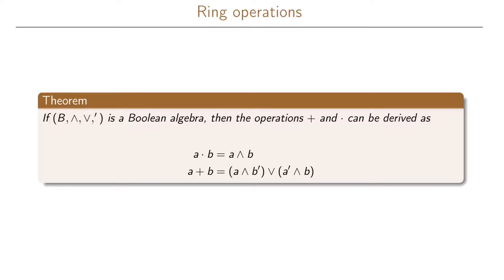We can also go in the other direction, where we define ring operations from Boolean algebra operations. If we have a Boolean algebra with operations AND, OR, and NOT, then the ring operations addition and multiplication can be derived as: A times B equals A AND B, and A plus B equals (A AND NOT B) OR (NOT A AND B).